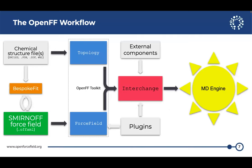You can create a topology that has a complete physicochemical description of the system — that's the protein, your drug, your water and salts, cofactors, membranes, buffer chemicals, whatever — along with the starting positions and the box size. And you can save that to disk as a topology with no parameters yet.